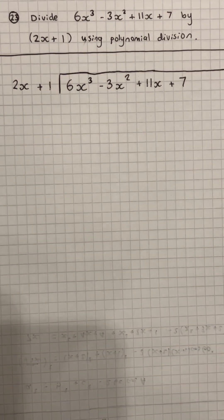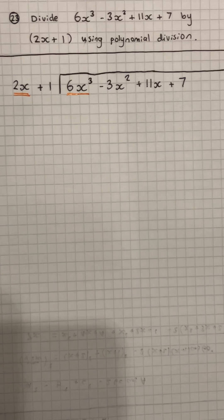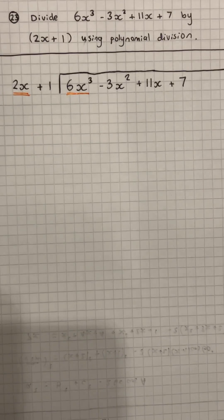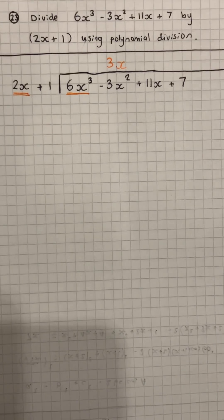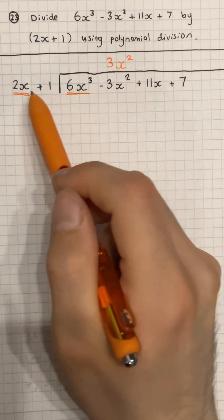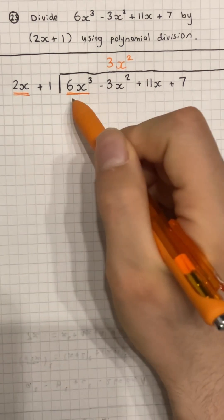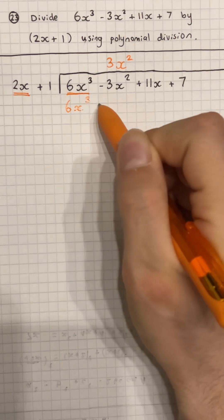Next, we ask ourselves, what do you times by 2x to get to 6x cubed? The answer, we put above, so 3x squared. Next, we take the answer and we times it by the outside. So do 3x squared times 2x, and then 3x squared times 1.